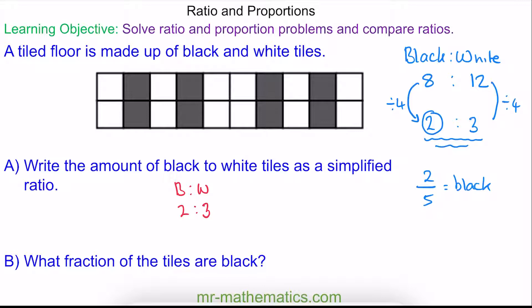We can see this works as well using the other ratio, where now we have 20 shares and 8 of them are black. We can simplify this fraction by dividing both by 4, and again we get 2 fifths. So 2 fifths of our pattern is made up of black tiles.